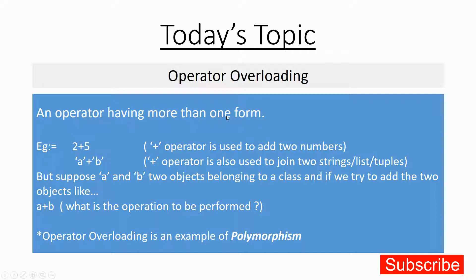This is called operator overloading — we have used this feature before when joining strings. But what if we are working with objects? Suppose we have two objects a and b that belong to a particular class, and we try to add them with a plus b. What implementation should we have, and what is going to happen if we provide this facility of adding two objects?